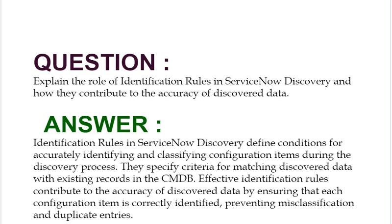Identification rules in ServiceNow Discovery define conditions for accurately identifying and classifying configuration items during the discovery process. They specify criteria for matching discovered data with existing records in the CMDB. Effective identification rules contribute to the accuracy of discovered data by ensuring that each configuration item is correctly identified, preventing misclassification and duplicate entries.